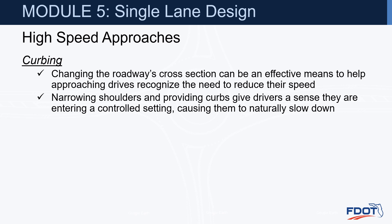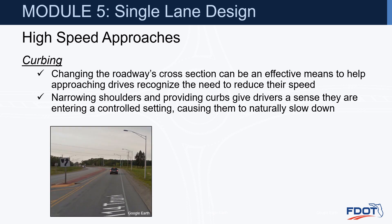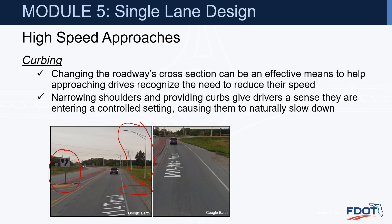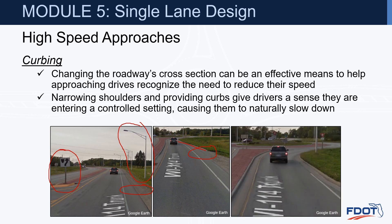Narrowing the shoulders and providing curbs give drivers a sense they are entering a controlled setting, causing them to naturally slow down. An example shows the beginning of a longer splitter island with a sign on an offset nose showing the driver they're approaching a roundabout. Lighting is provided in advance as well, with a rural shoulder still present farther out. As you get closer, curb is introduced on the right side, tapering down as it approaches the roundabout, creating a pinching feeling to naturally slow down vehicles.